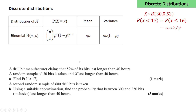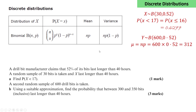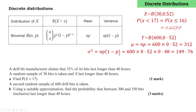Now we're told a second random sample of 600 drill bits is taken. Let's say the number of bits lasting longer than 40 hours is y. So in this case, y has a binomial distribution with 600 trials and a probability of success of 0.52. The mean of this distribution, np, will be 600 times 0.52, or 312. And the variance, calculated using np times 1 minus p, is 149.76.